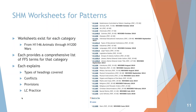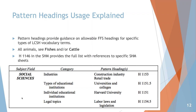Let's take a look at how we can use the pattern headings. Here is a snippet of the chart in H1146 showing the subject field 'social sciences.' It lists categories including industries — which has two pattern headings: construction industry and retail trade. For types of educational institutions you can look at universities and colleges, and for individual educational institutions you look up Harvard University. For legal topics you would look up labor laws and legislation. Those are the LCSH headings that work as the pattern.